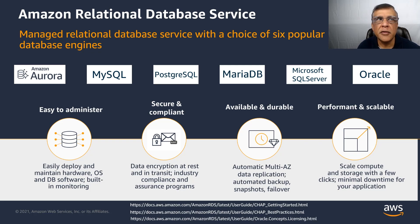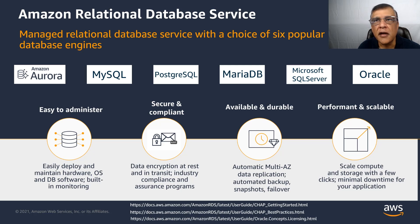Amazon Relational Database Service provides services and APIs to manage databases running on six popular database engines. It makes it easy to administer and provision these databases, and makes them secure and compliant by encrypting data at rest and in transit. It makes them highly available and durable using multi-AZ configuration, and they can be highly performant and scalable for memory, CPU, and storage. The supported engines are Amazon Aurora, MySQL, PostgreSQL, MariaDB, Microsoft SQL Server, and Oracle. Links are provided which show best practices for RDS and the licensing required.